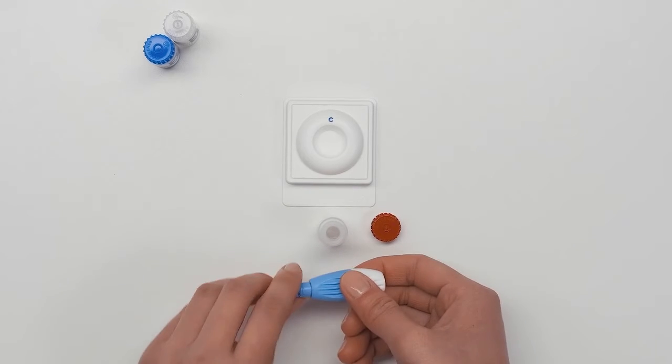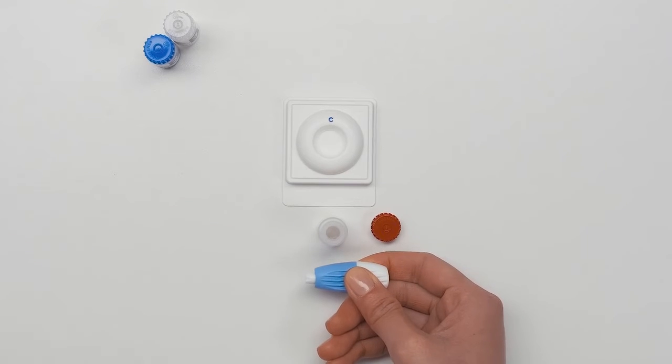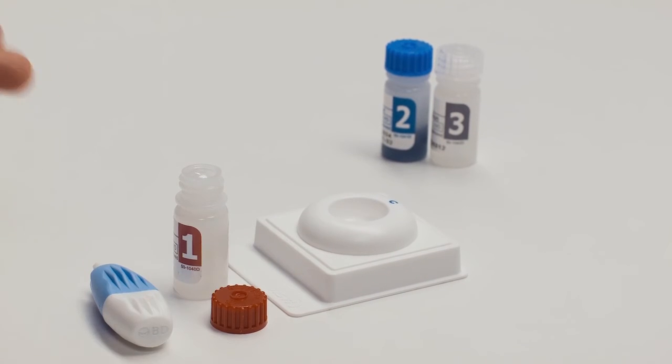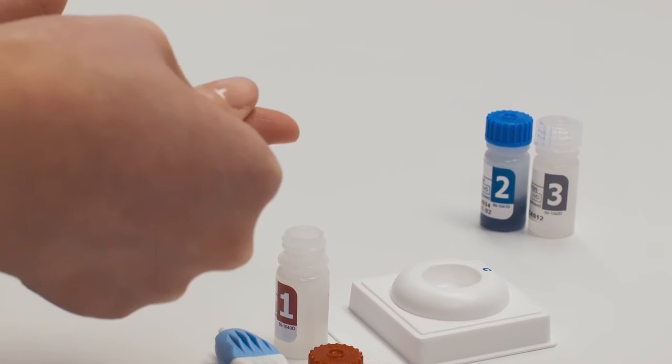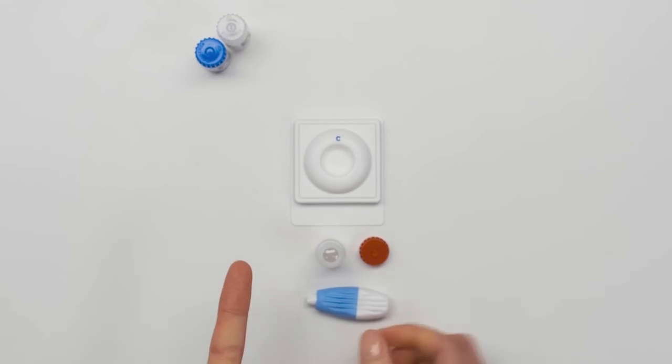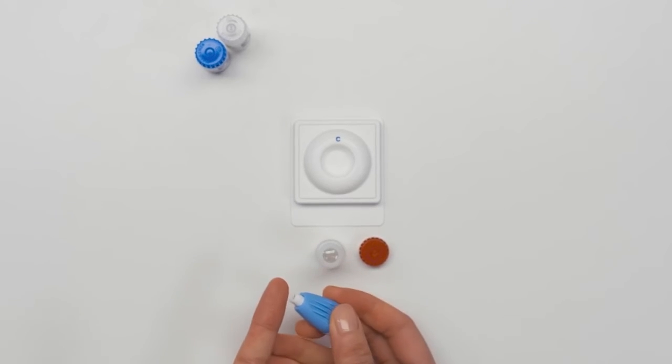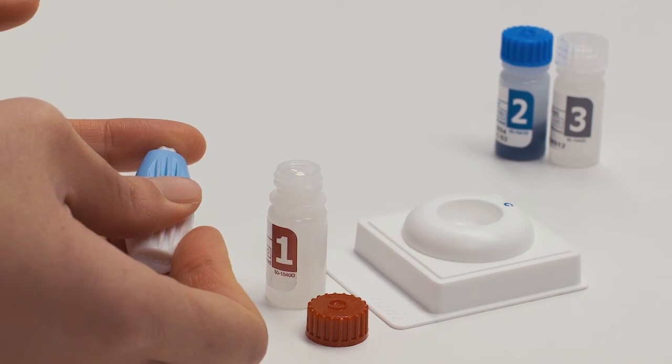Twist and pull the blue tip out of the lancet and place aside. Rub your finger until warm. Place the lancet on the side of your fingertip. Press hard until you hear a click.